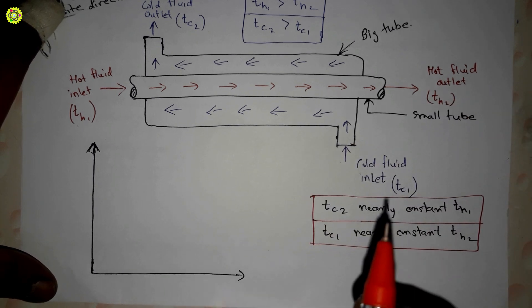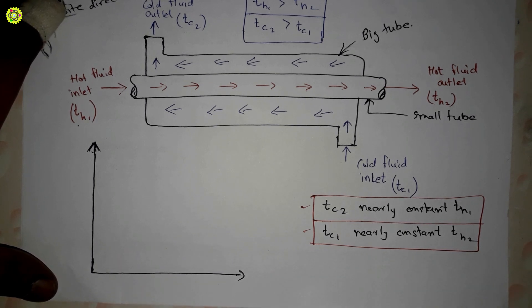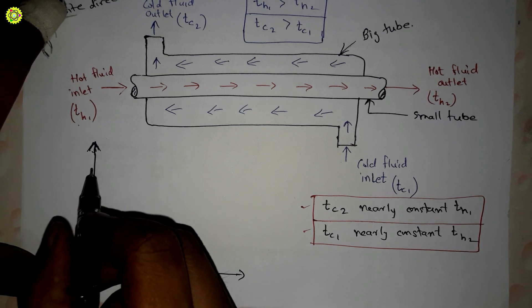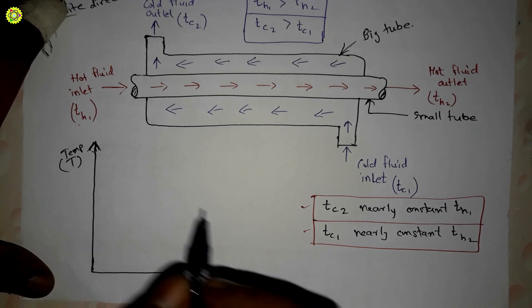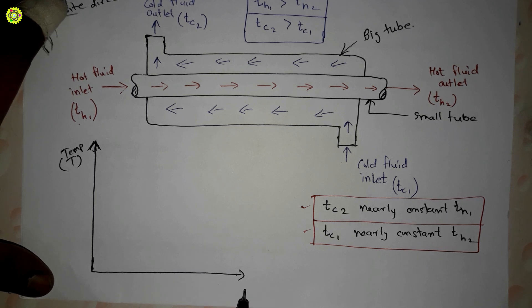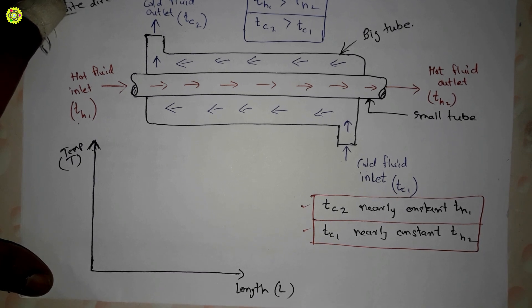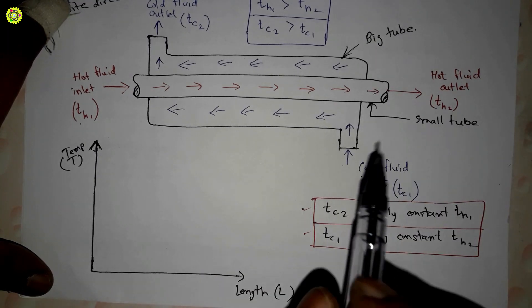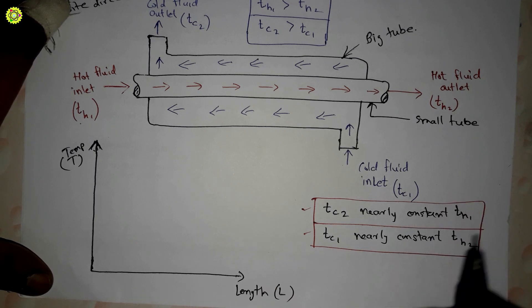Now we will see these statements in the graph. The vertical axis is the temperature axis (T), and the horizontal x-axis is the length (L). As the length of both tubes increases, there will be more heat transfer.